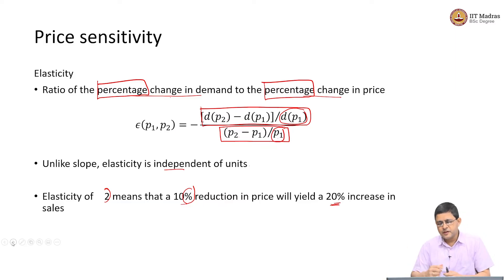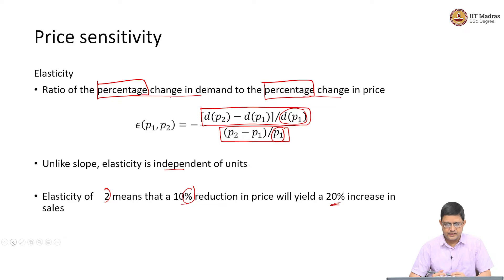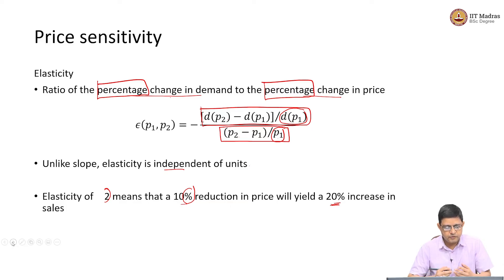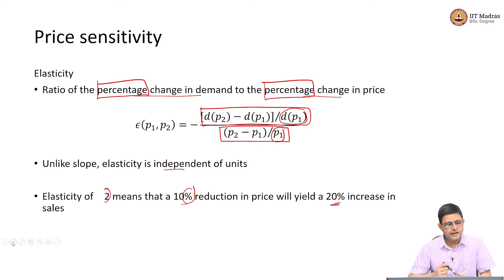What is the general interpretation of elasticity? There are certain goods which are supposed to be less elastic. For example, take common salt that we use in our food. Salt is required — without salt the food just will not taste. Even if prices of salt go up, we do not expect consumption to change that much because salt is an essential commodity. So I would expect the elasticity of something like salt to be much lesser.